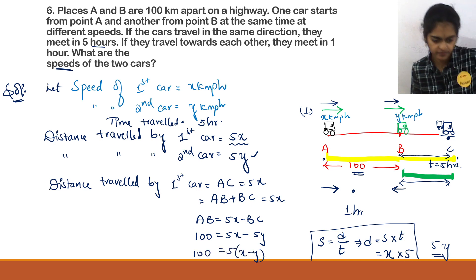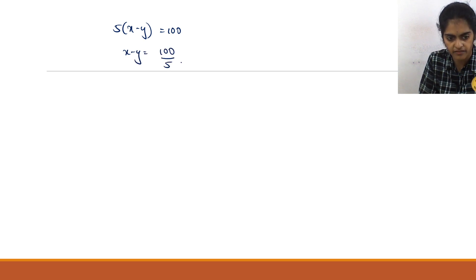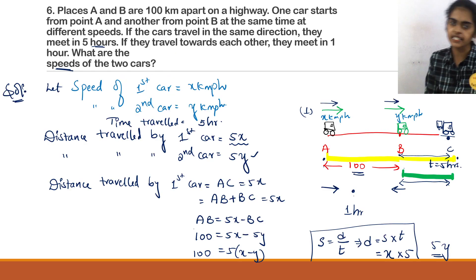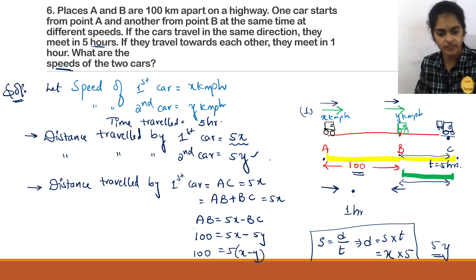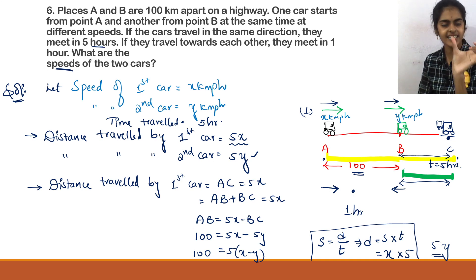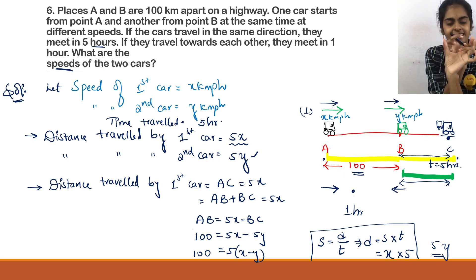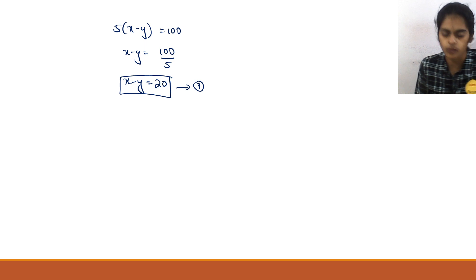Taking 5 common: 5(x − y) = 100, so x − y = 100/5 = 20. This is equation 1: x − y = 20. We derived this using the distance relationship AC = AB + BC, where AB = 100 km and BC = 5y.